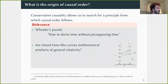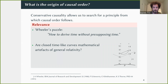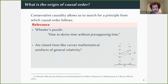In a theory of conservative causality, causal order is not preserved. We can then ask: what assumption do we need to add to retrieve a theory with a well-defined causal order? This is very similar to Wheeler's puzzle — how to derive time without presupposing time, posed in 1988. The motivation was the Wheeler–DeWitt equation, which shows that the wave function of the whole universe has zero time derivative; it does not evolve in time. How can we still recover time and clocks?